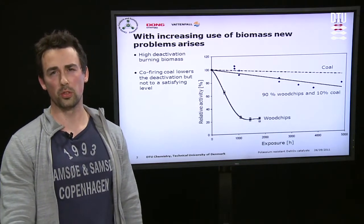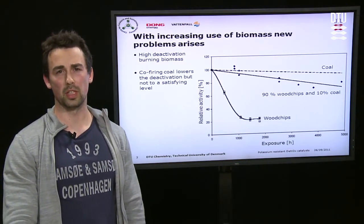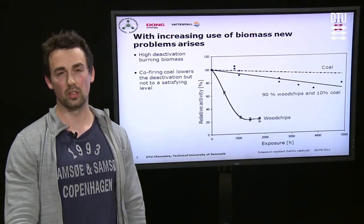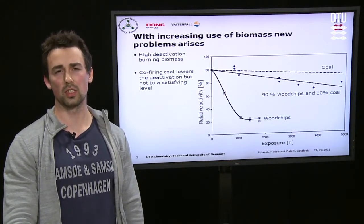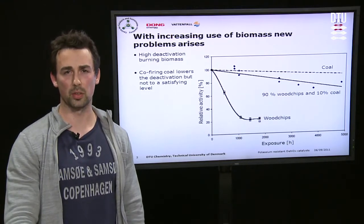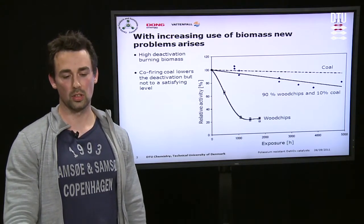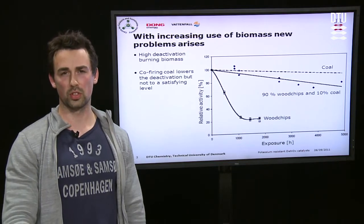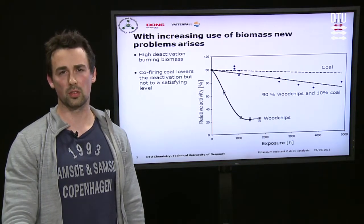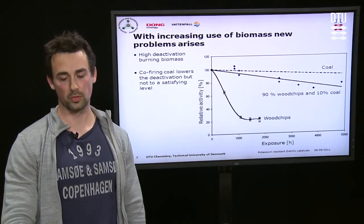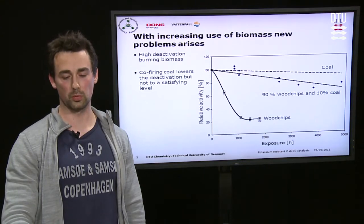With increasing use of biomass to lower our CO2 emissions, new problems arise, because the catalyst is severely deactivated by the biomass. Co-firing with coal lowers the deactivation to some extent, but not enough. So what can we do?